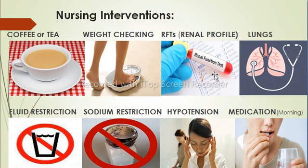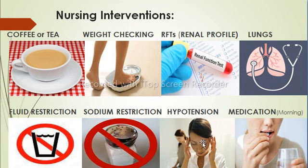The nurse must also check the lungs using a stethoscope for fluid accumulation or pulmonary edema. The patient must be kept on fluid restriction as well as sodium restriction. The nurse must also watch for orthostatic hypotension, because when a patient changes position their blood pressure may fall, increasing the risk of falling. Lastly, furosemide should be given to the patient in the morning to prevent nocturia.